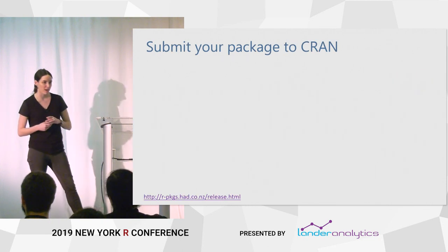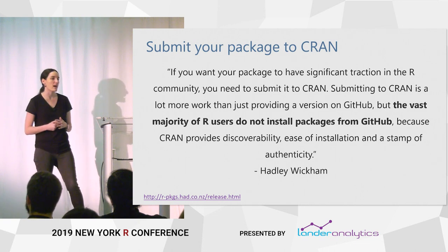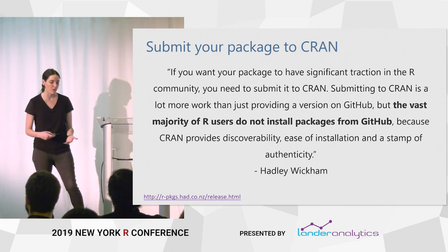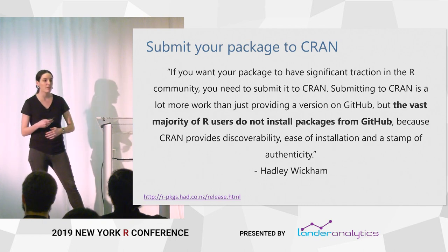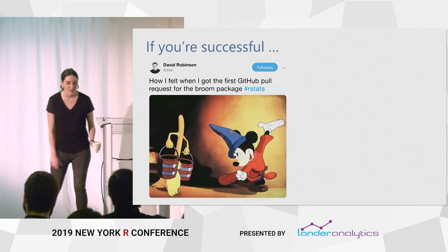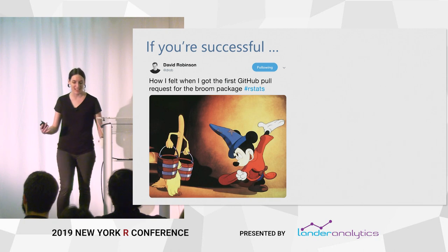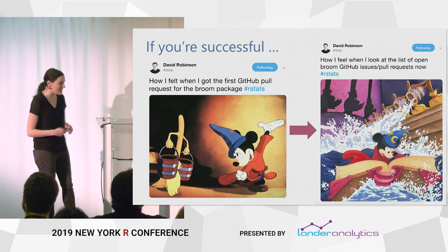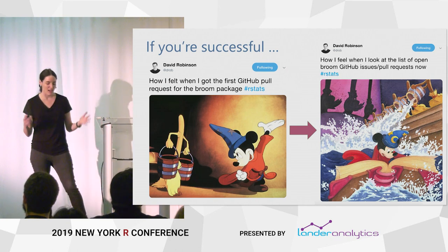The final step is you can submit your package to CRAN. The majority of R users do not install packages from GitHub, so if you want your package to be really widely used, it will have to go to CRAN. That said, I think it's nice to wait until you have a stable user-facing API — you don't want to submit if you're going to be changing a lot of things. And if you're successful, you can see this is D-Rob talking about his broom package — how he felt when he got his first GitHub pull request, and how overwhelming it can eventually become. It is a really exciting thing, and eventually it can become bigger than you ever imagined.